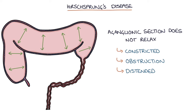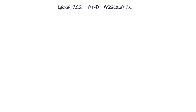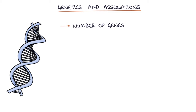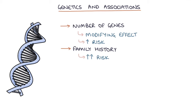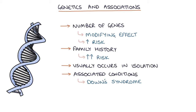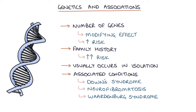There are a number of genes on various chromosomes that may have a modifying effect to increase the risk of Hirschsprung's disease. A family history greatly increases the risk, so always take a careful family history. Hirschsprung's disease usually occurs in isolation, however it is associated with a number of other syndromes, including Down syndrome, neurofibromatosis, Waardenburg syndrome — a genetic condition causing pale blue eyes, hearing loss, and patches of white hair and skin — and multiple endocrine neoplasia type 2.